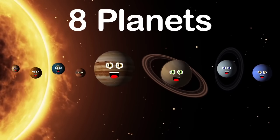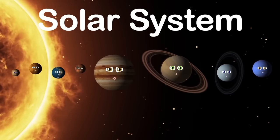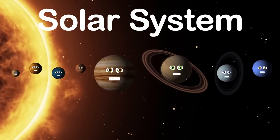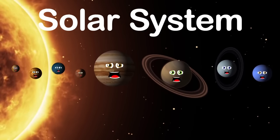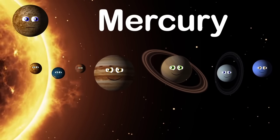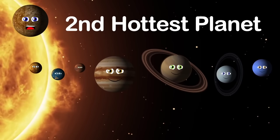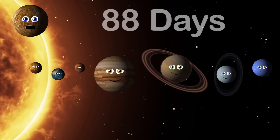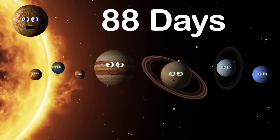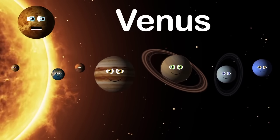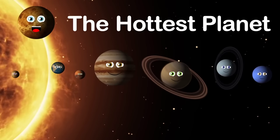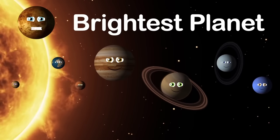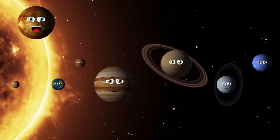There are eight planets in the solar system and we revolve around the sun. My name is Mercury — I'm the second hottest planet but the closest to the sun. A year on my surface is 88 days; I'm the smallest but lots of fun. My name is Venus — I'm the hottest planet, the second from the sun, the brightest planet in our solar system, and too hot for anyone.